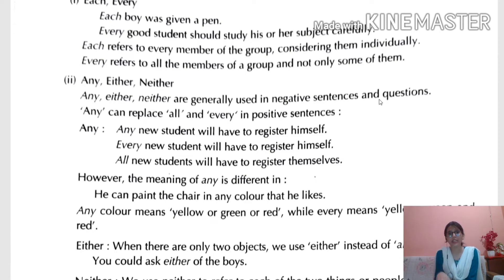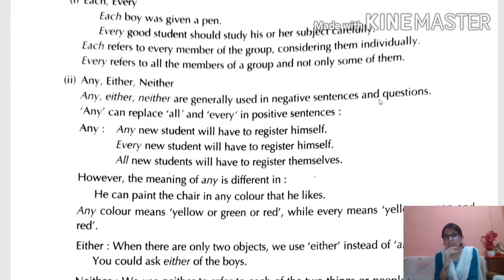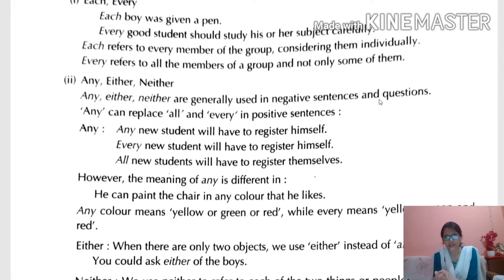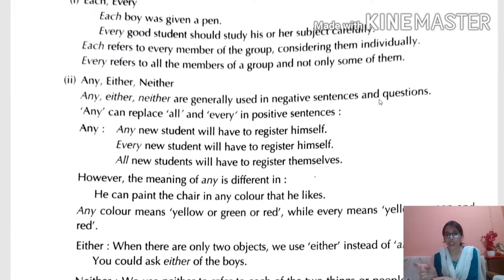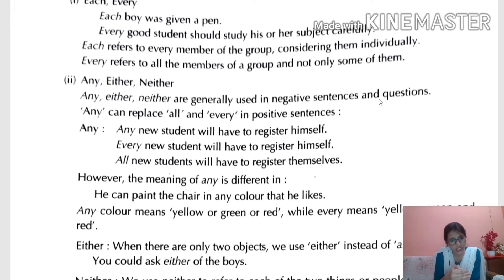Next: any, either, neither. These are generally used in negative sentences and questions. 'Any' can replace 'all' and 'every' in positive situations. The biggest difference between 'some' and 'any' is that 'some' is used in positive sentences and 'any' is generally used in negative sentences and questions.